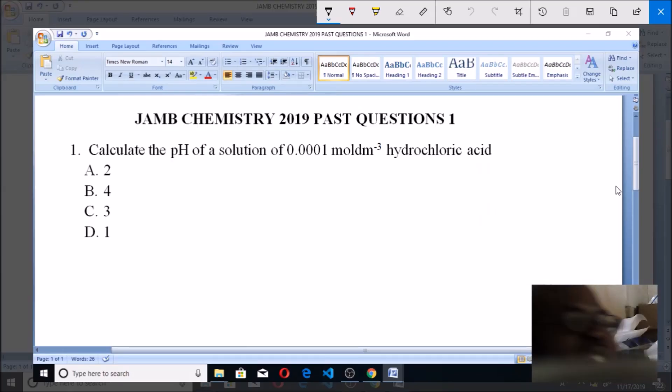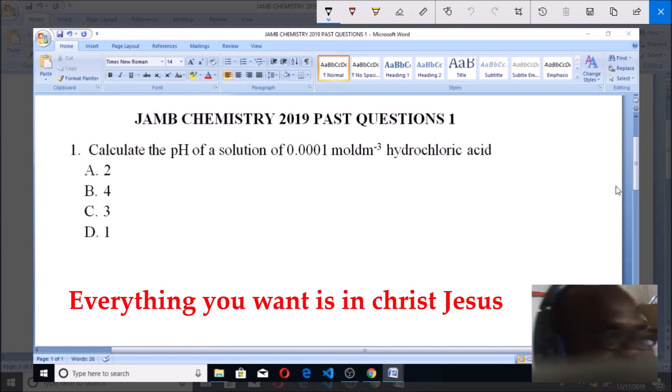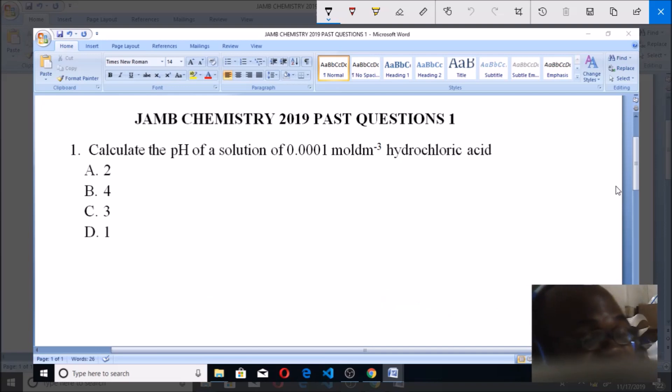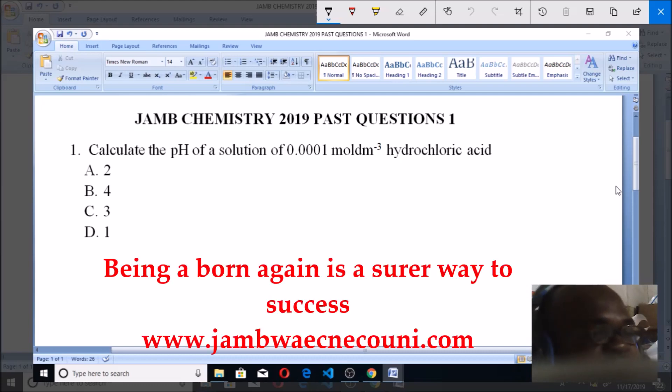Hello and welcome. Let's look at this Chemistry JAMB past question from 2019, question number one. If you have your own past question, my number one might not be the same as yours, but just take it and learn it. Calculate the pH of a solution of 0.0001 mol per dm³ hydrochloric acid.